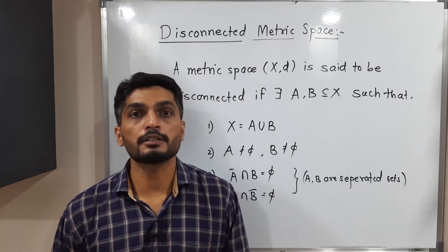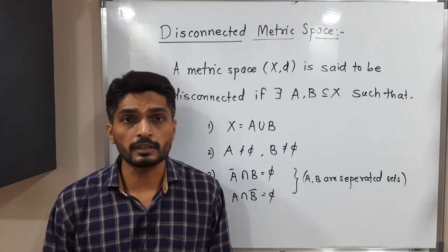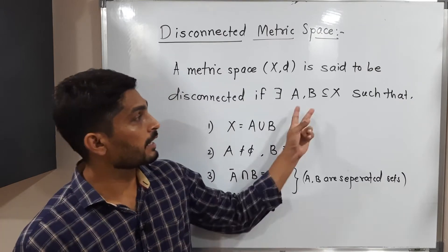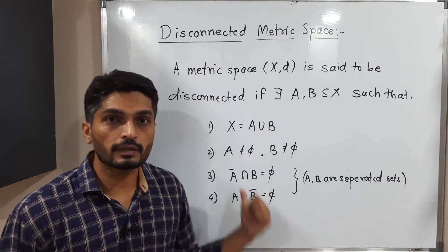So let us see when we say the metric space X is disconnected, if it is possible to find two subsets of X, A and B, which will satisfy these four conditions.